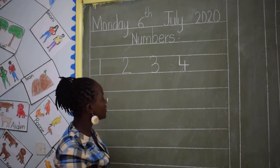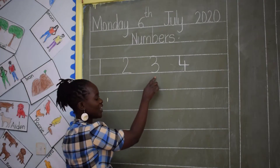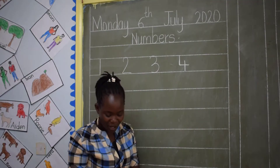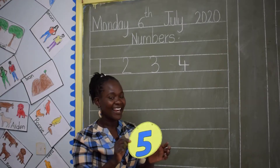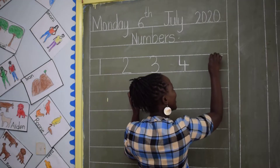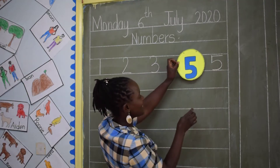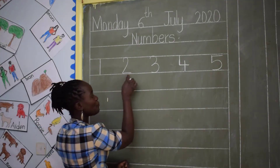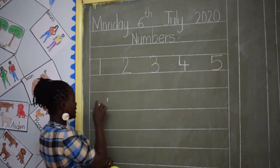Let's count: 1, 2, 3, 4, and 5. Let me look for number 5. Here is number 5 like a pussycat. Now, can we write number 5. 1, 2, 3, 4, 5, and 6.